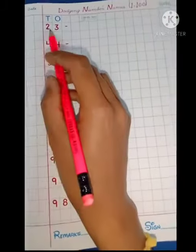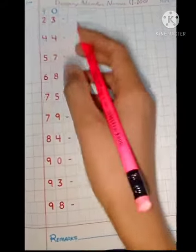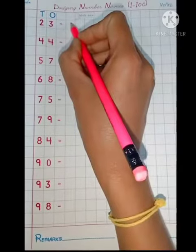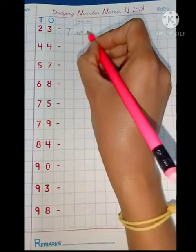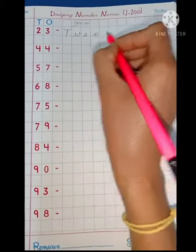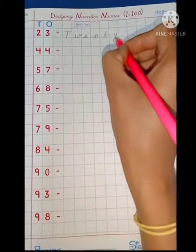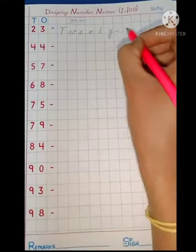Now first number is 23. We will write 23: T-W-E-N-T-Y, twenty, dash, T-H-R-E-E, twenty-three.